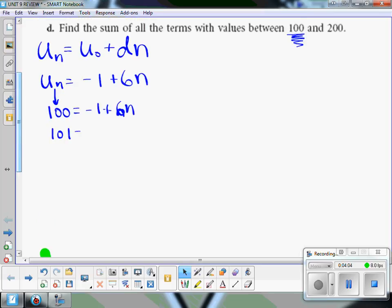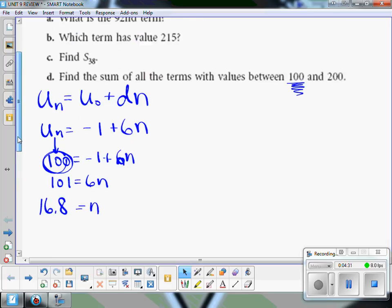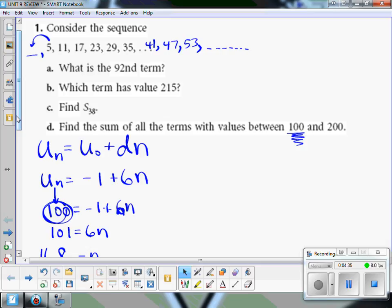We're going to add 1 to both sides and divide by 6. And what do you get when you take 101 divided by 6? I don't think it's a whole number. You get about 16.8. So here's what that's saying. We were trying to find out when 100 would be on this list. So what it means is, when you get down to the 16.8, when you get to the 16.8 term, you'd have 100. So that means that when you get to the 17th term, you're finally at a number bigger than 100. So that's our starting point. The 17th term.